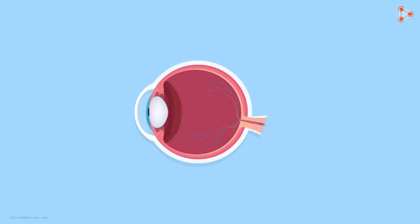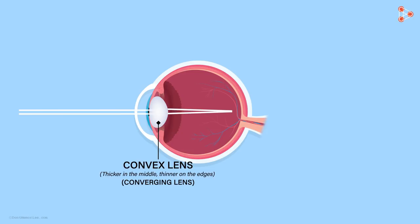What happens next? The light that enters through the pupil falls on the lens kept behind. The lens is a convex lens. What is a convex lens? Convex lens is a lens which is thicker at the center than the edges. It's a converging lens, that is, it focuses all the light at one point.